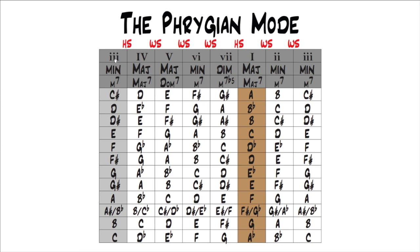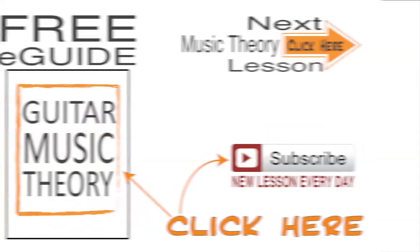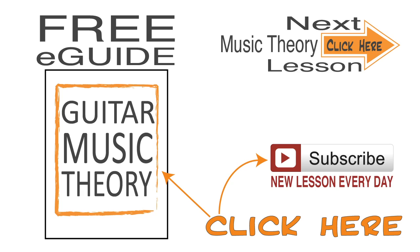Looking at the chart again, the Phrygian mode is our root — everything in the gray is the Phrygian mode. For G Phrygian: G, A flat, B flat, C, D, E flat, F, G. Our parent major scale is in the tan, which is E flat. The steps have rearranged to match the Phrygian mode: half step, whole step, whole step, whole step, half step, whole step, whole step. You can now look at the Phrygian mode in every single key quickly — for example, C sharp Phrygian is right there on the chart. That's the third mode of the major scale, the Phrygian mode. Go ahead and move on to the next lesson where we're going to talk about the fourth mode of the major scale — the Lydian mode. Download the eGuide, all these diagrams are in there, and be sure to subscribe because we have at least one new lesson every day.